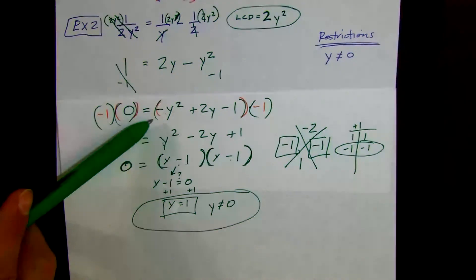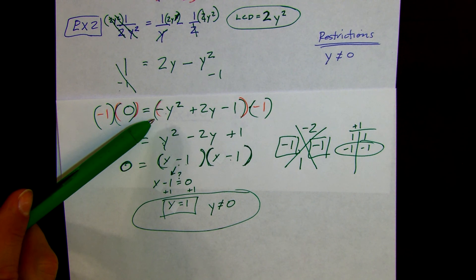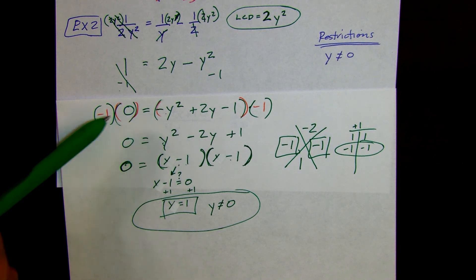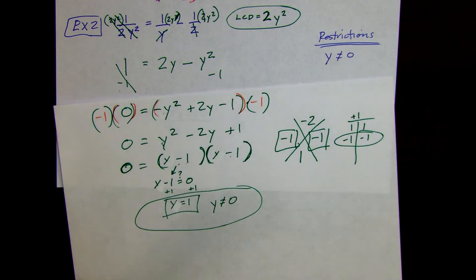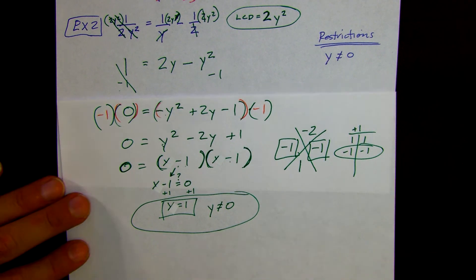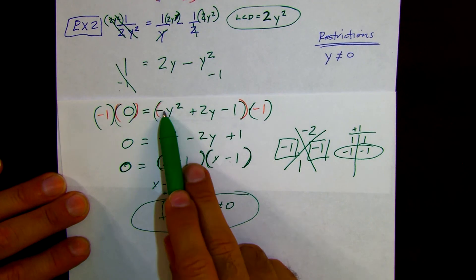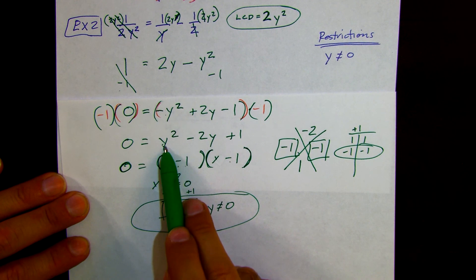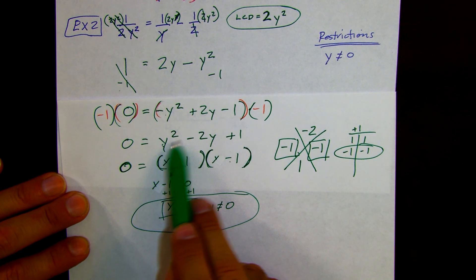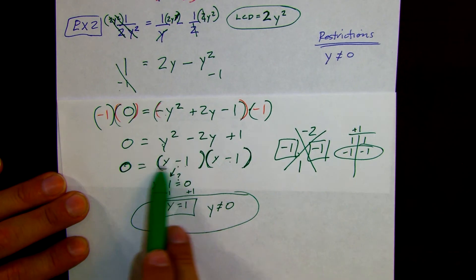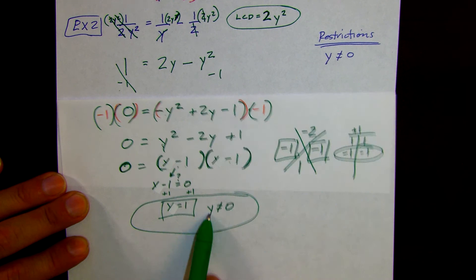Just accept that multiplying by negative 1 is something we can do. If it's an equation, we can multiply both sides by whatever we want without changing the balance of it. The reason I chose negative 1 was to turn the negative y squared into just y squared, so we can work out the problem and get our answer.